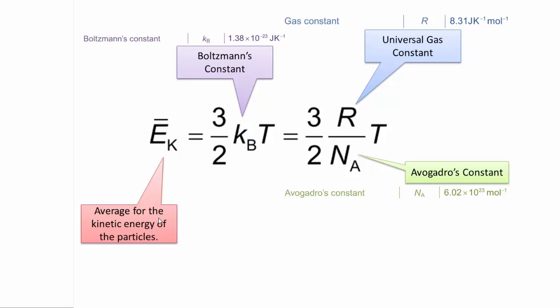And you may notice that these equations are basically the same thing. If I highlight on the left side, you have KB there. On the right side, you have R/NA. These are interchangeable, basically because KB, Boltzmann's constant, is equal to R over NA, the universal gas constant divided by Avogadro's constant.